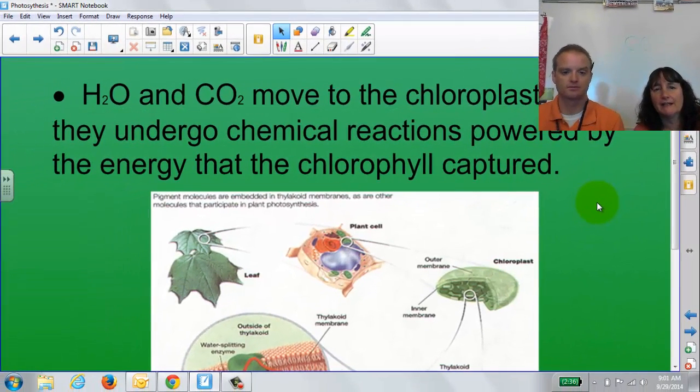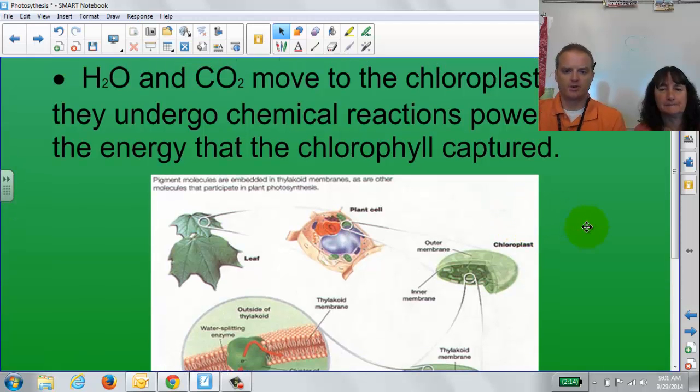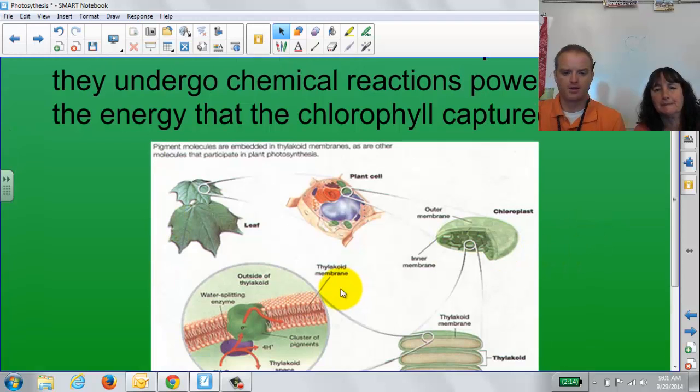Then, water and carbon dioxide move into the chloroplast, where a chemical reaction takes place, powered by the energy from the sun that the chlorophyll captured. So I need water. I need CO2. Are those my basic ingredients I need? Yep.